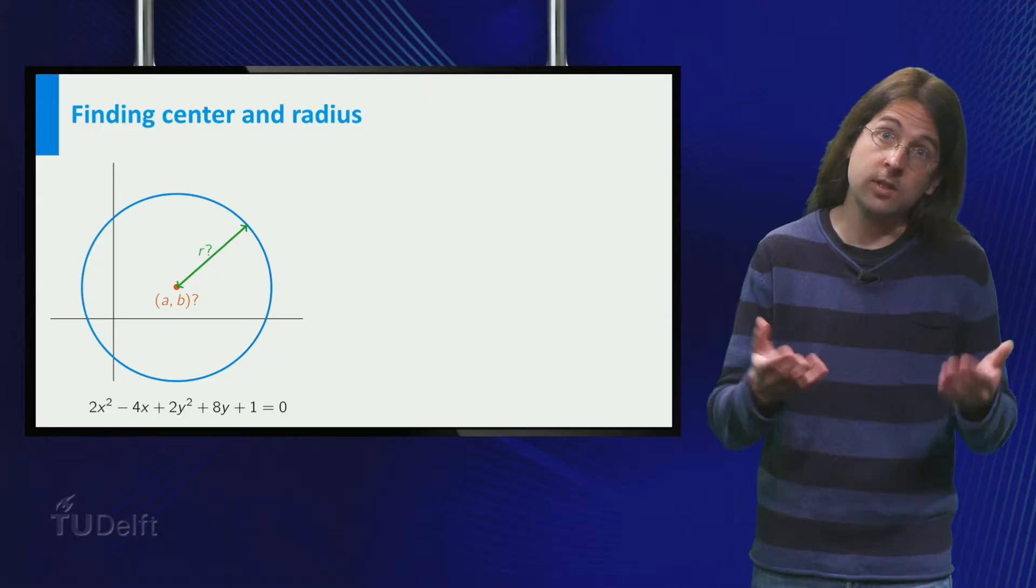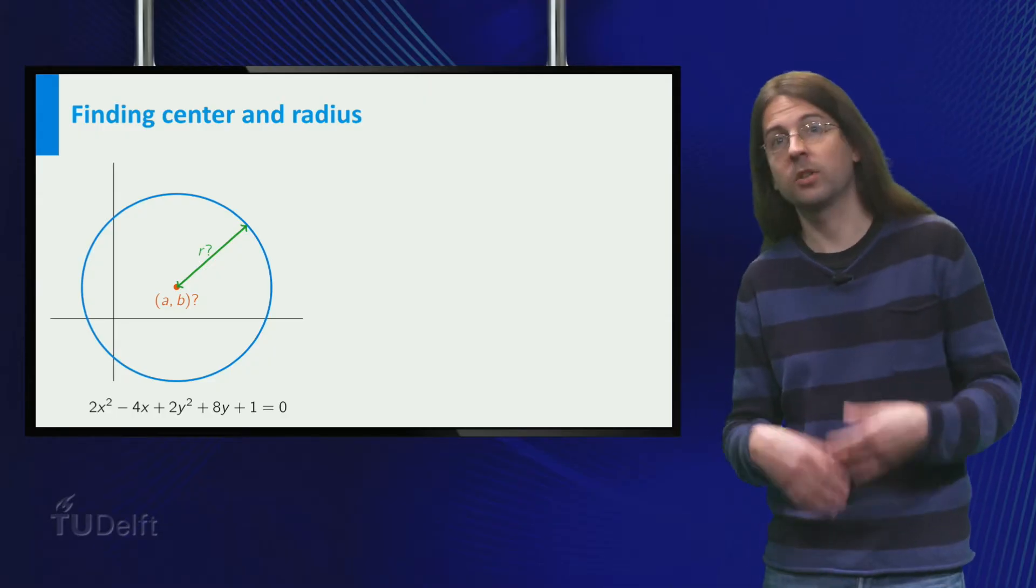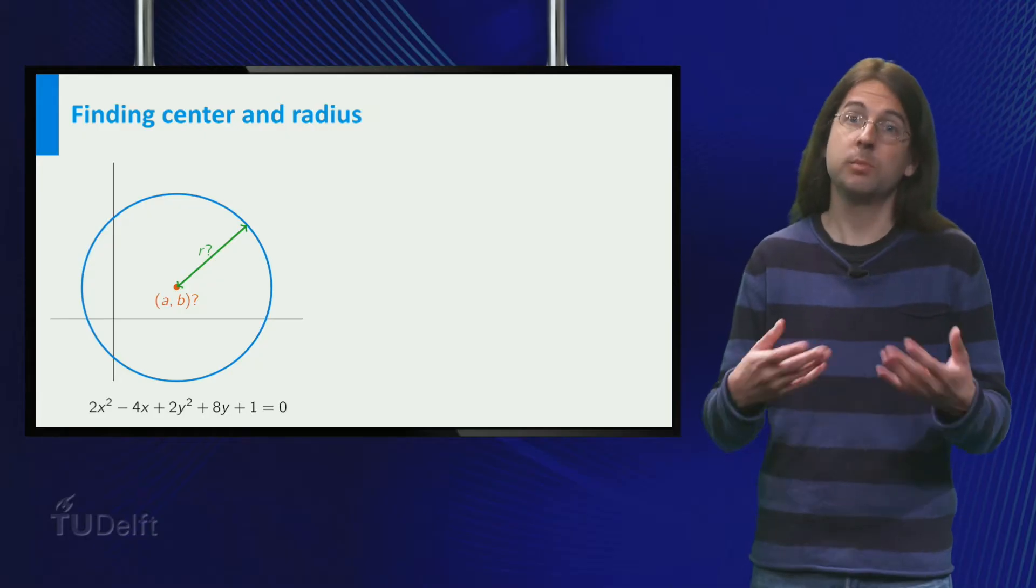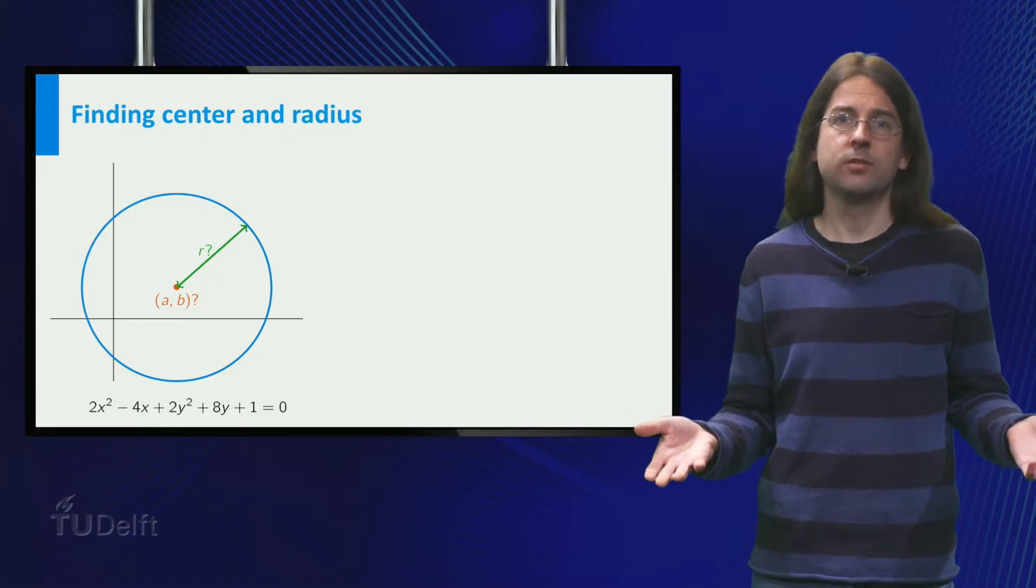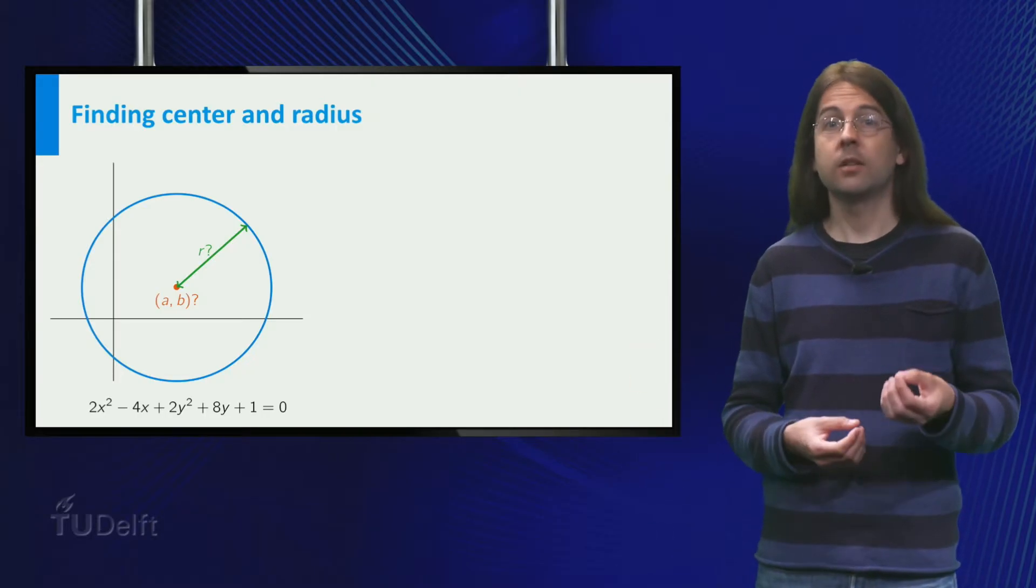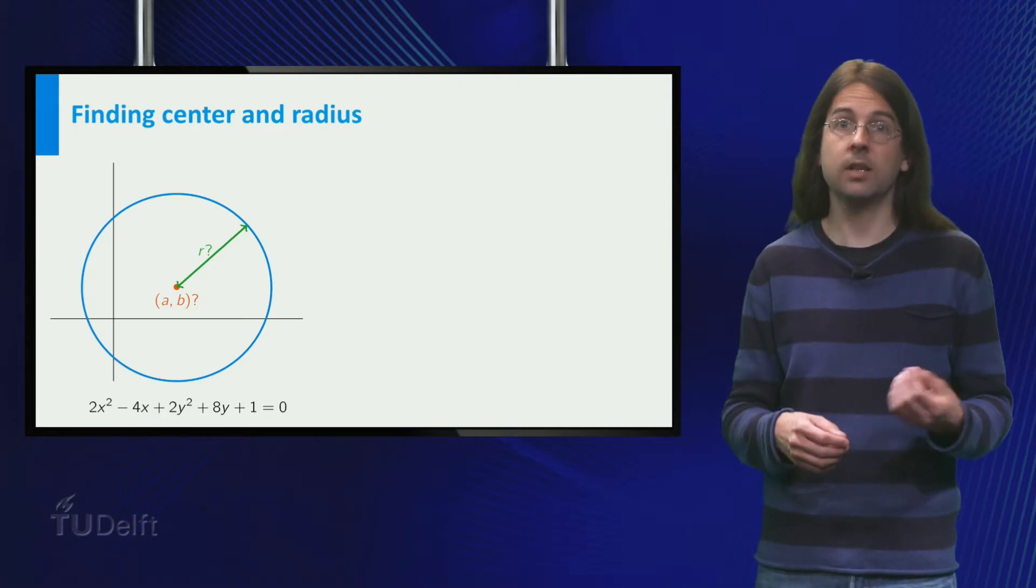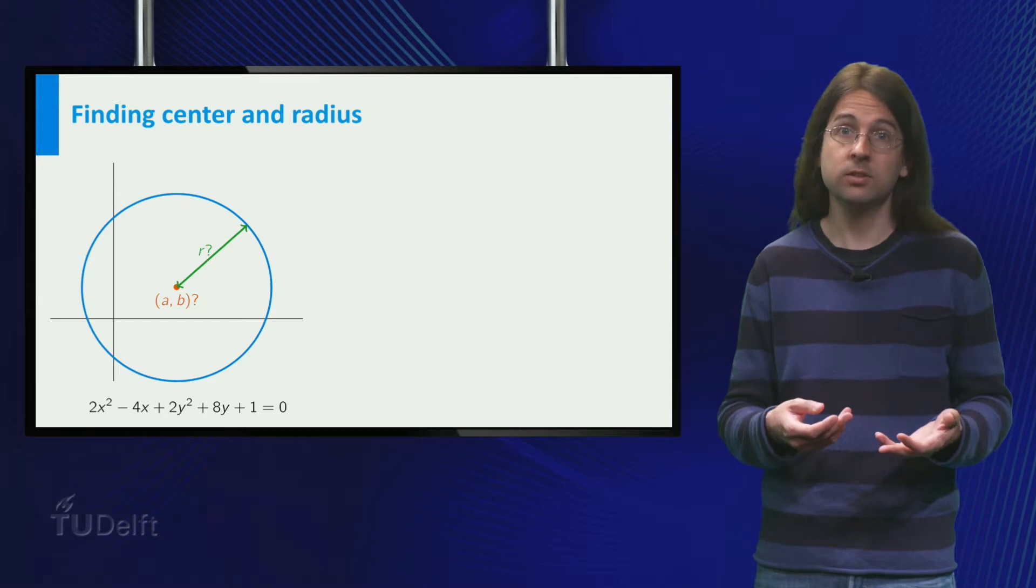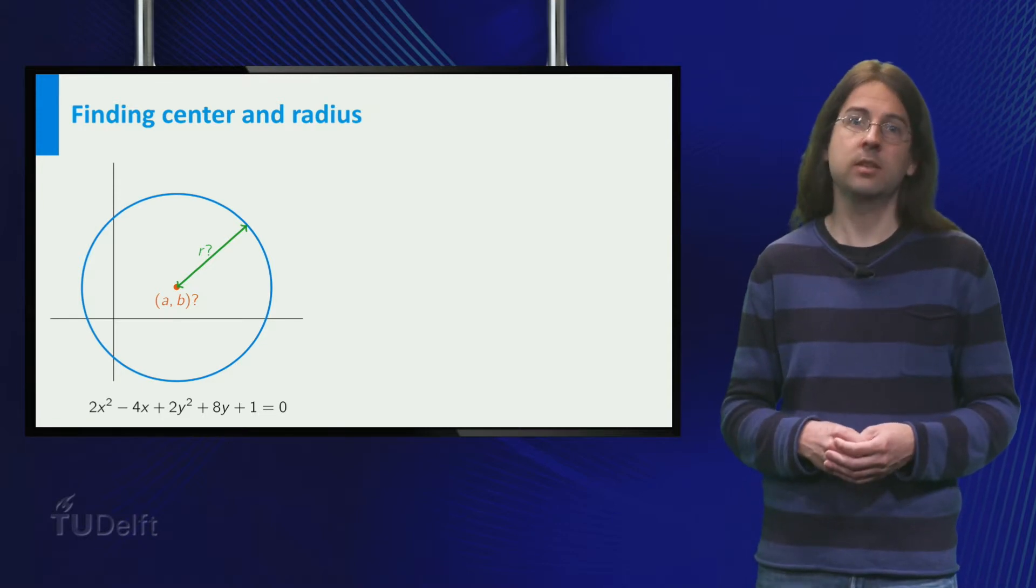However, sometimes you get a formula like 2x squared minus 4x plus 2y squared plus 8y plus 1 equals 0, and you wonder what this represents. And an equation like this represents a circle, as it only contains terms of the form x squared, y squared, x, y, and the constant, and the coefficient in front of x squared and y squared is identical.